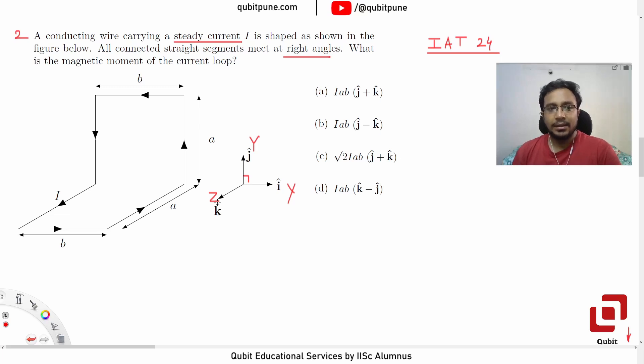Now the known formula for us of finding magnetic moment is M equals current into A, the area enclosed by the current.